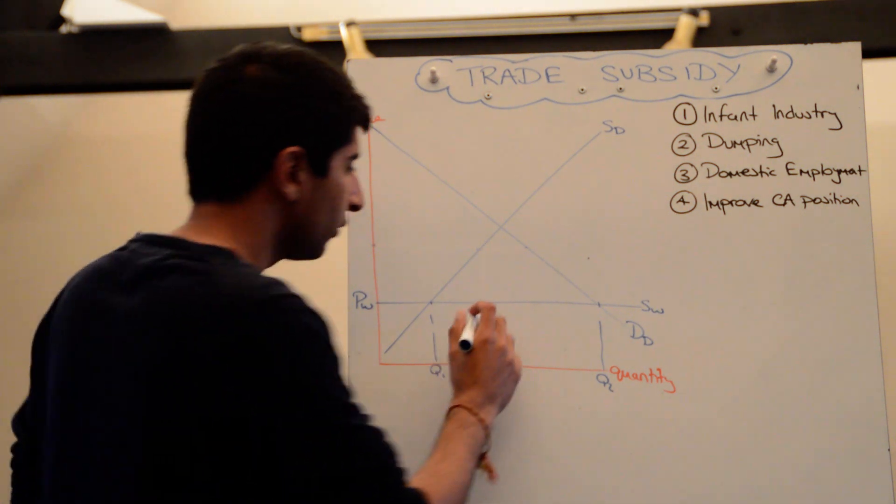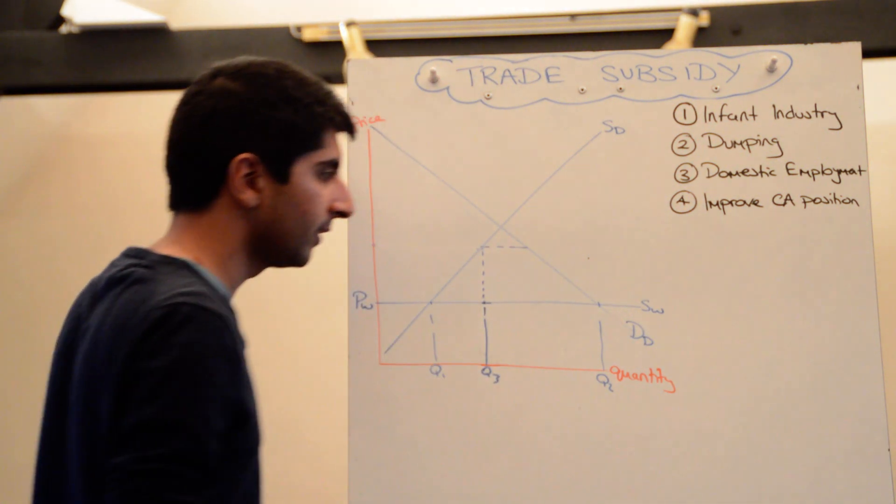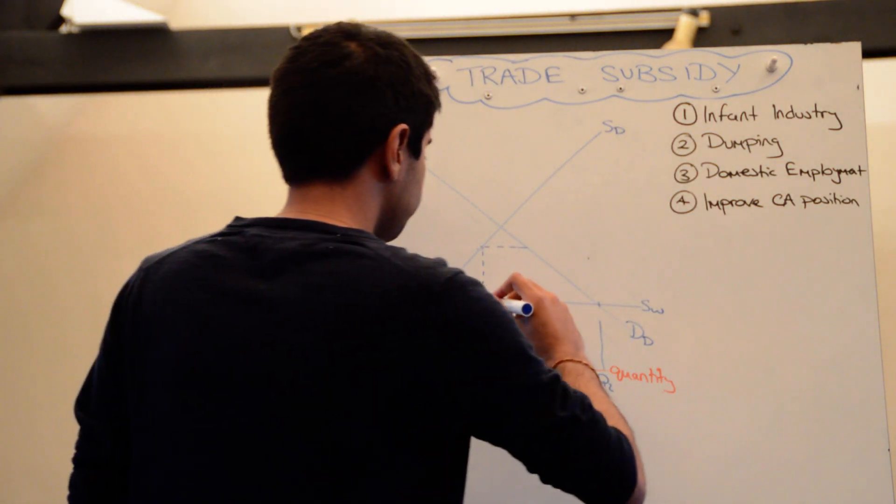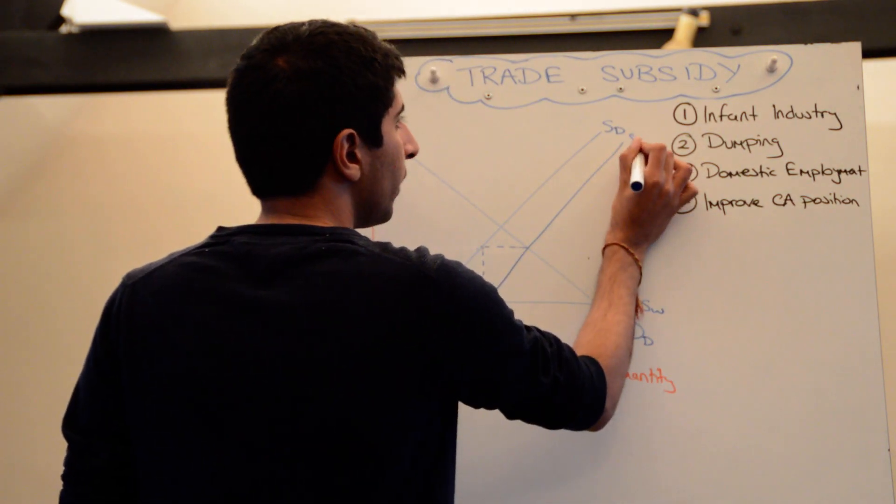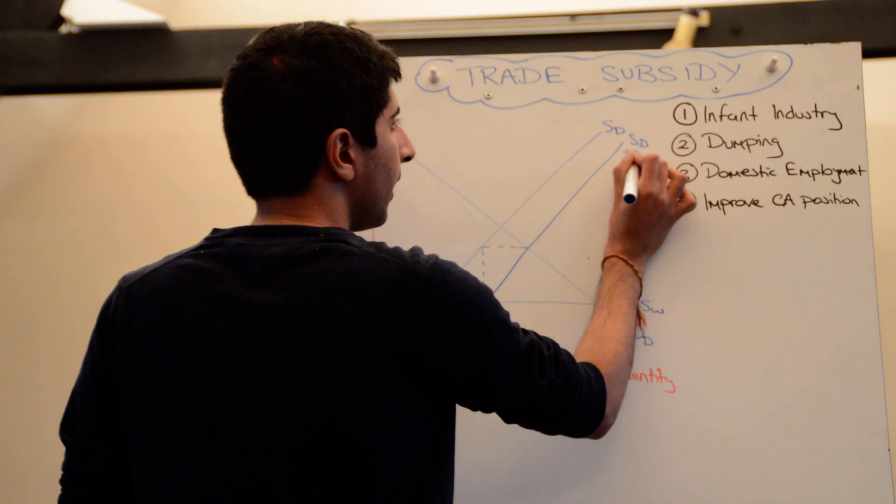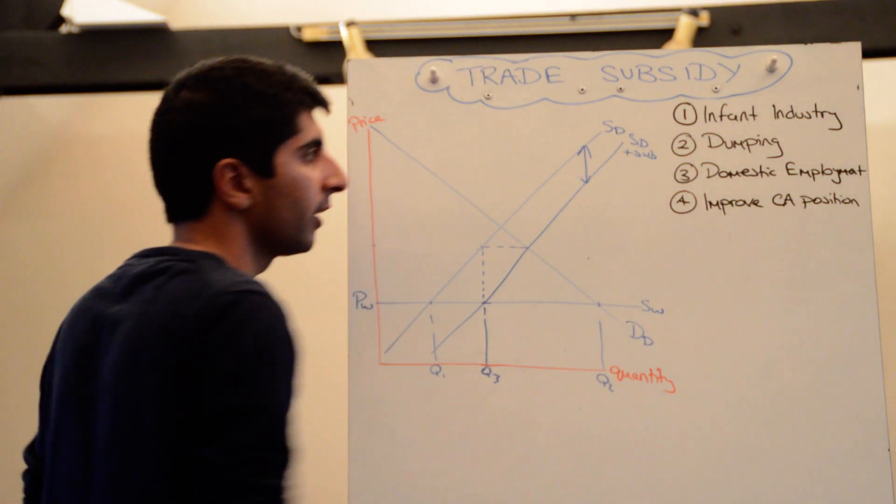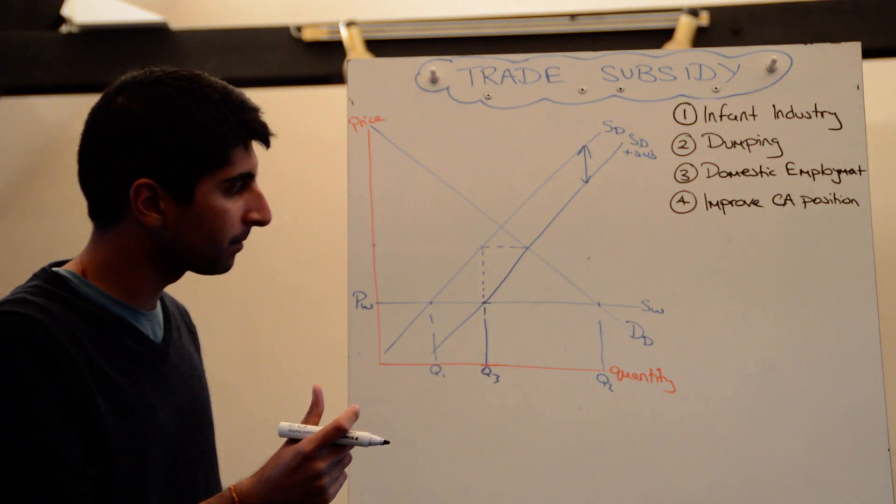Then move up and across. So move up to the domestic supply curve and move across to then the domestic demand curve. And then you can draw your new supply curve. So parallel shift like that. We'll call that supply domestic plus the subsidy. And the vertical distance between the two supply curves is the value of the subsidy, the numerical value of the subsidy.